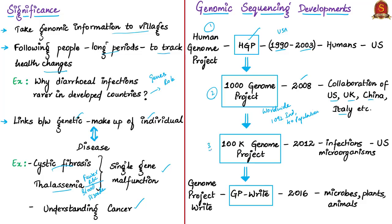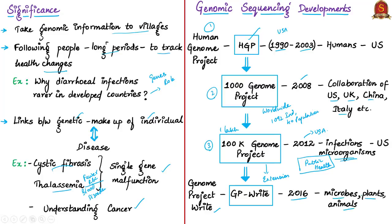Next was the 100K Genome Project (1 lakh). It aims to sequence the genomes of 1 lakh infectious microorganisms to create a database of bacterial genome sequences for use in public health, outbreak detection, and bacterial pathogen detection. It was a US-funded project started in 2012. Finally, Genome Project RITE, announced in 2016, is an extension of the Human Genome Project to include development of technologies for synthesis and testing of many genomes of microbes, plants and animals.